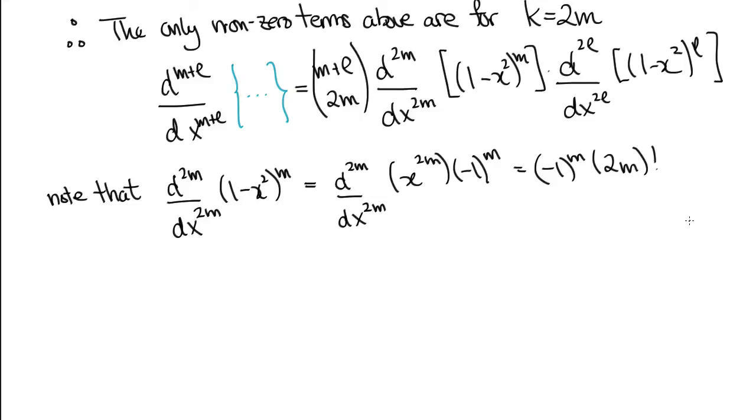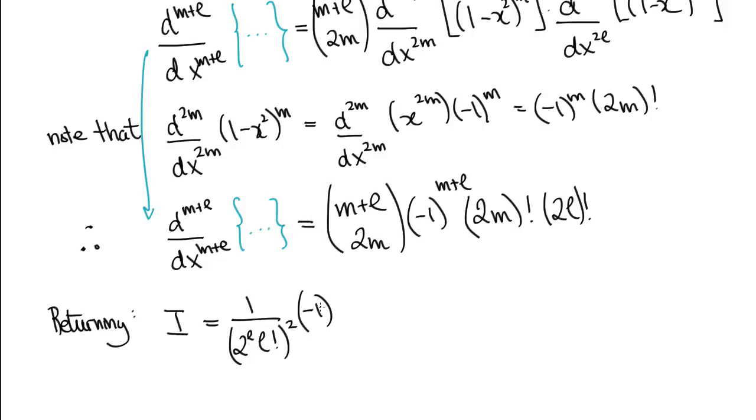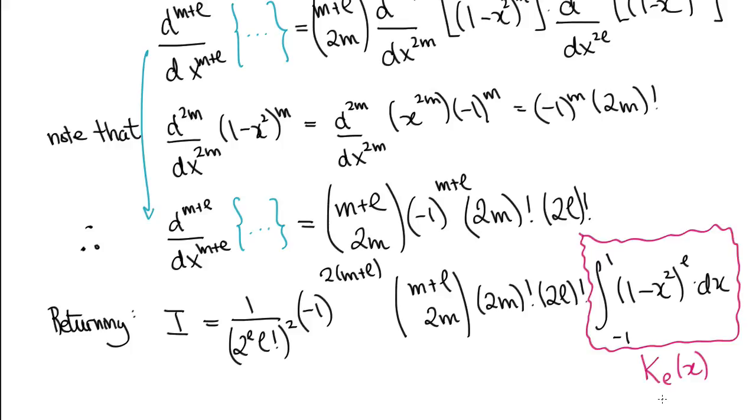We can then do the same for the 2Lth derivative. Combining this gives us a slightly more manageable expression for the M plus Kth derivative of the curly brace. It's now time to return the integral i and put in our above result. It only remains to compute this integral of 1 minus X squared to the L, which we call KL, and, well this is just a dirty trick.